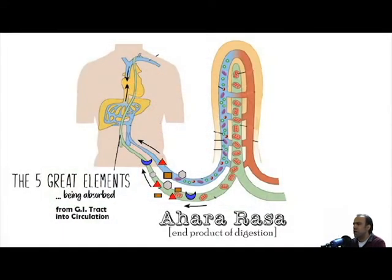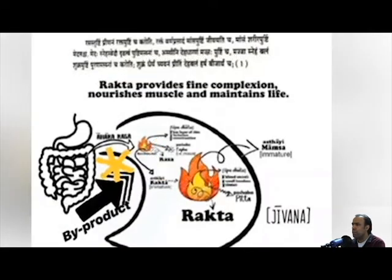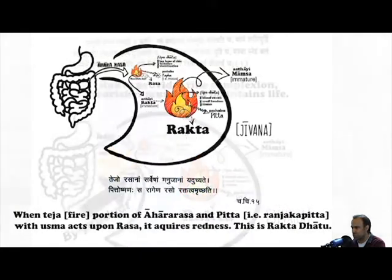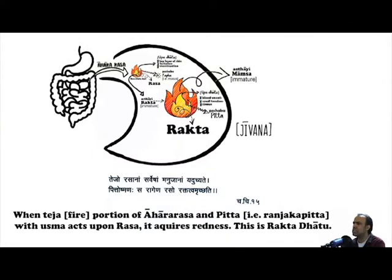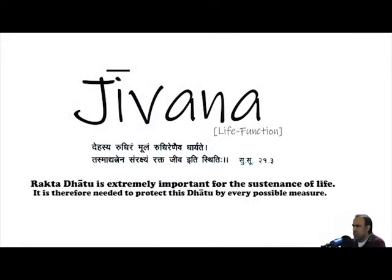The end product of digestion is Aharasa, which forms Rasa Datu. Ayurveda describes Rasa as being Pretanam — that which is pleasing, and that which brings satisfaction and nourishment to the entire body. One of the byproducts of Rasa Datu are precursors required for the formation of Raktadatu, meaning a portion of Rasa Datu refines and transforms into Raktadatu. The function of Raktadatu is Jivanam, or that which helps to sustain life.